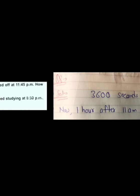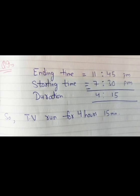Question 9: a TV was switched on at 7:30 PM and switched off at 11:45 PM. How long did it run? The ending time is 11:45 PM and the starting time is 7:30 PM. Subtracting the starting time from the ending time, the duration is 4 hours 15 minutes.